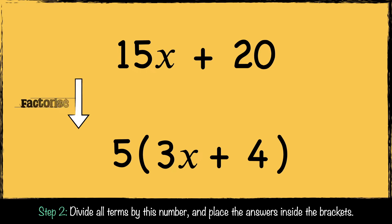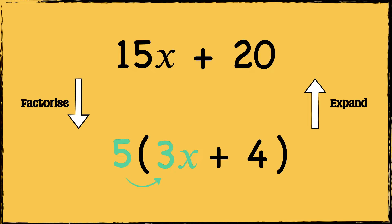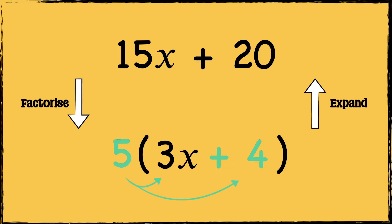So this expression can be factorized to 5(3x + 4). You can double-check your answer by expanding — if factorized correctly it should expand back to 15x + 20. 5 times 3x is 15x, and 5 times 4 is 20.